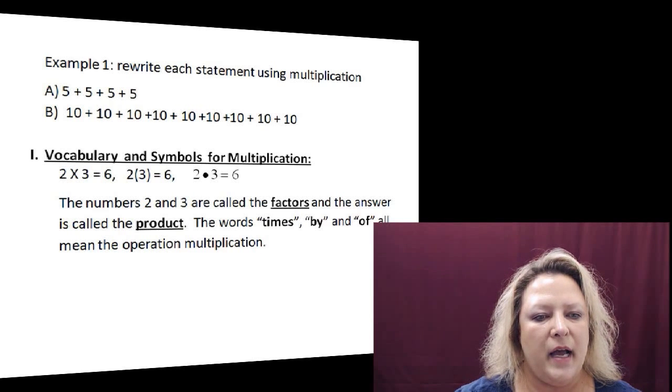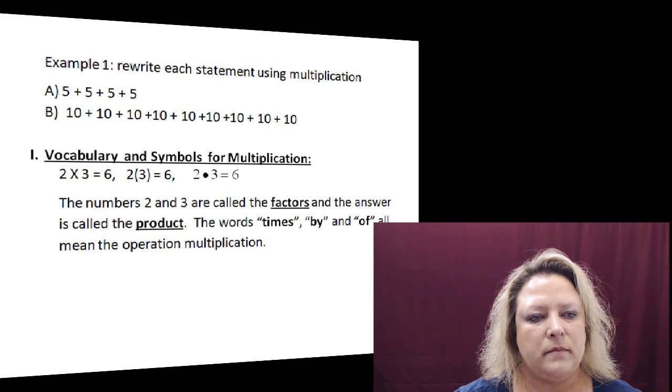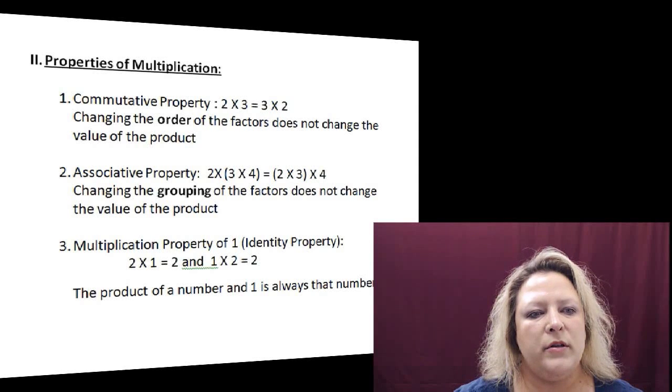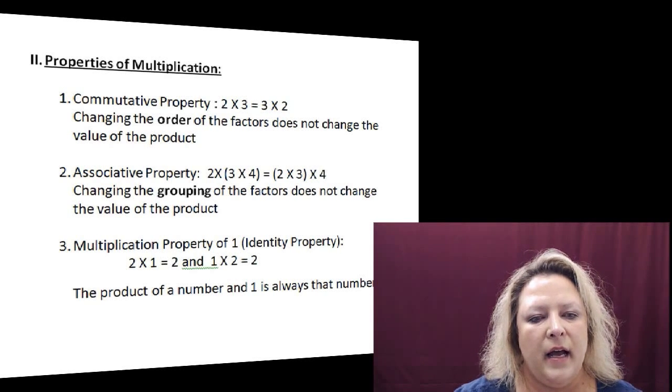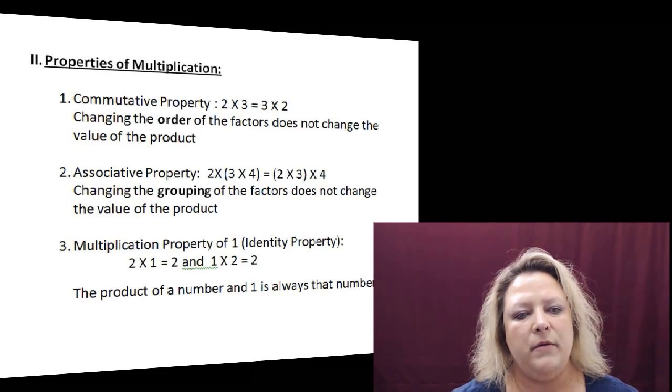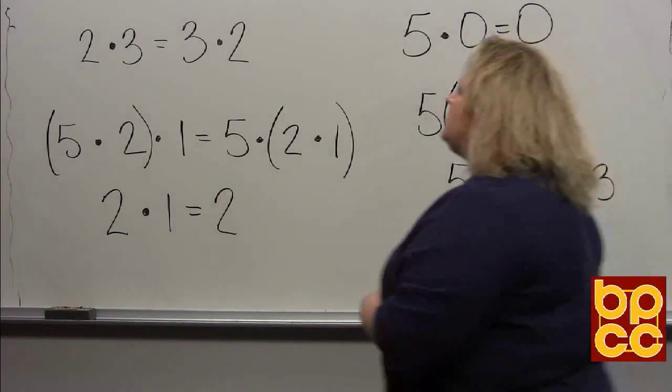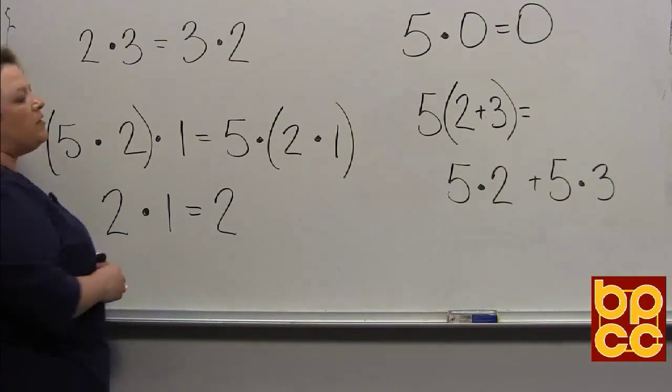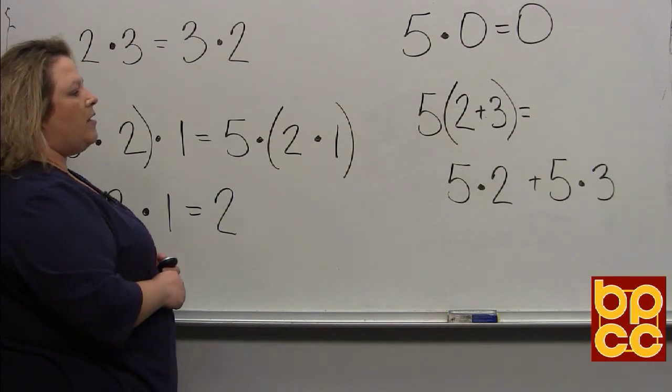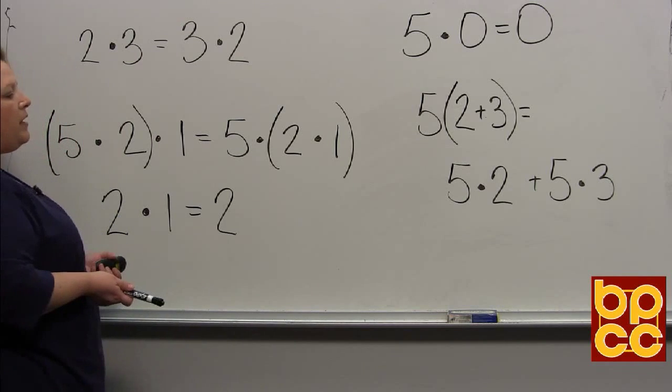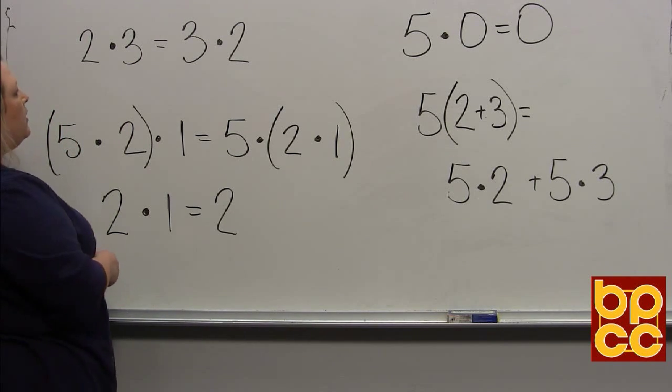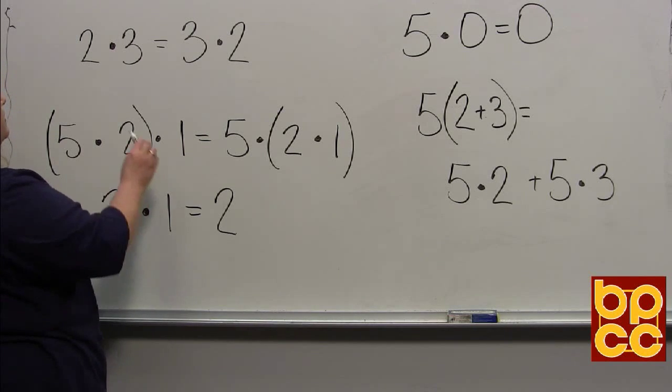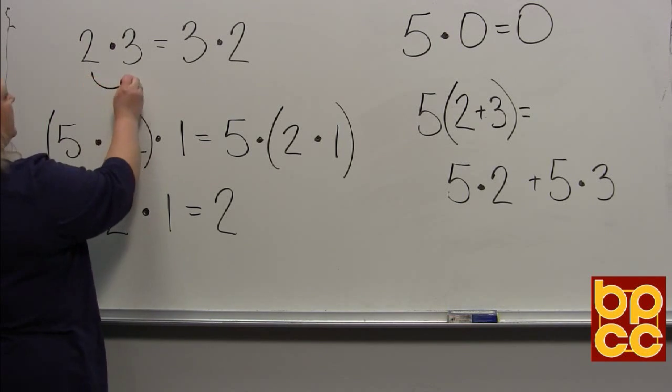Okay, what we're going to do next is talk about some of the properties of multiplication. To do that, I have some stuff on the board that I'm going to show you. So the first thing is the commutative property. Commuting is kind of like going back and forth to work or school. When you do this, you make one trip and then come back home, and it doesn't matter—it's still the same amount of miles.